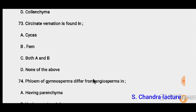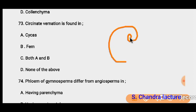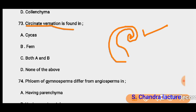Question 73: Circinate vernation is found in. This is an adaptive condition where the leaf parts are coiled upward. This coiled condition is circinate vernation, and it generally occurs in pteridophytes, especially ferns. It does not occur in cycas because cycas is a gymnosperm, and this condition is not seen in gymnosperms.